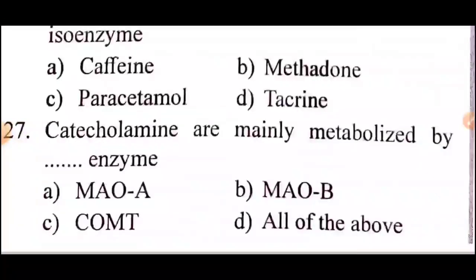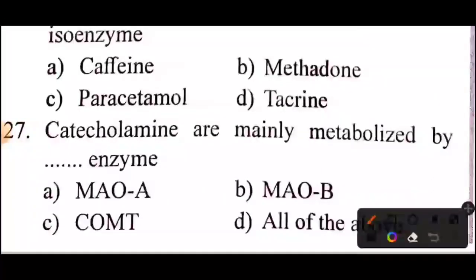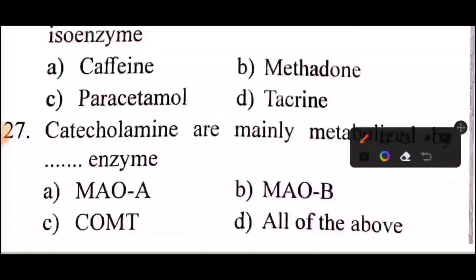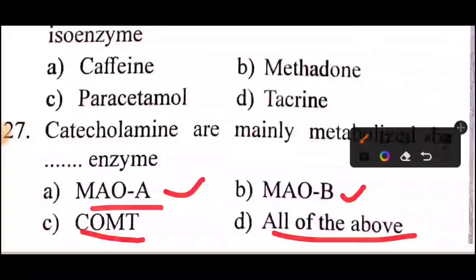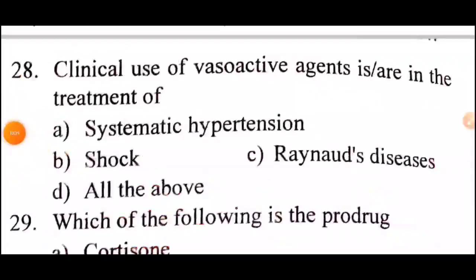Question: catecholamines are mainly metabolized by which enzyme? Answer: option D — MAO-A, MAO-B, and COMT.